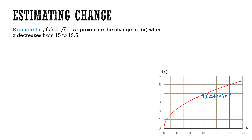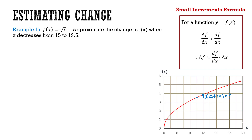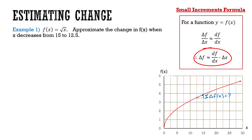To estimate this change I'm going to use the small increments formula. While I haven't referred to this as the small increments formula before, we have discussed this relationship before. Here we have delta f over delta x — that's delta in Greek — it refers to change in f over change in x, and it can be approximated by df/dx, the first derivative. Thus we get an estimate of the amount of change in the vertical direction by using our first derivative times the change in x.